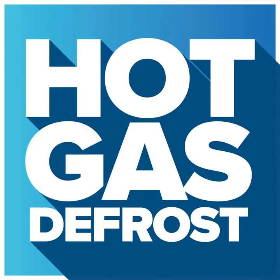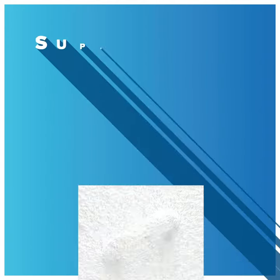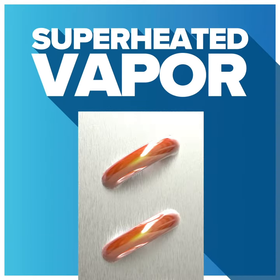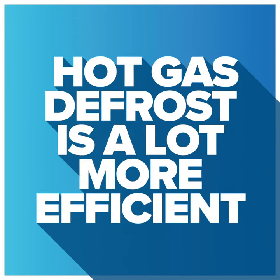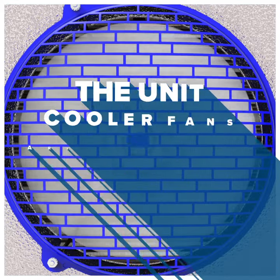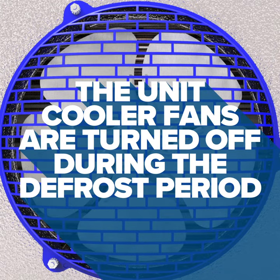Last is the hot gas defrost system, which uses the superheated vapor from the compressor discharge port to warm the evaporator coil to melt the ice. While not as widely applied as electric defrost, hot gas defrost is a lot more efficient since the heat source flows through the coil circuit, allowing more effective heat exchange with the formed ice. During this type of defrost, the evaporator fans are turned off for the defrost period.